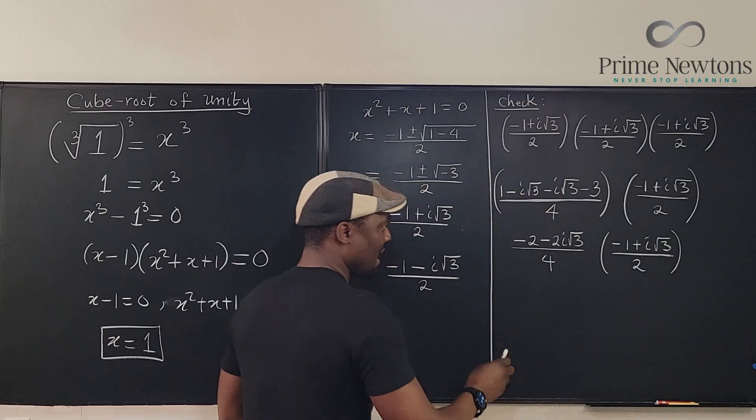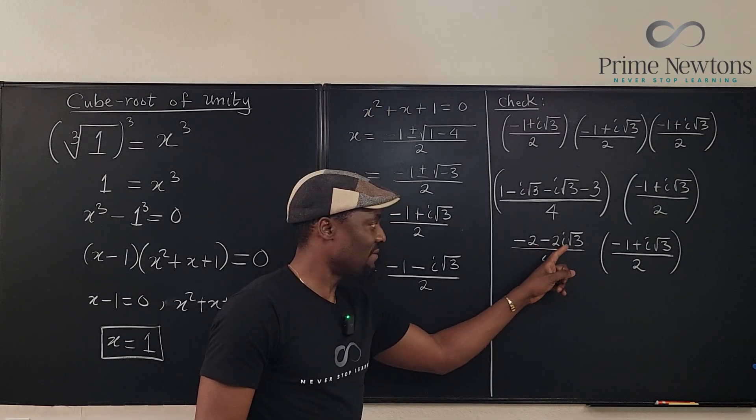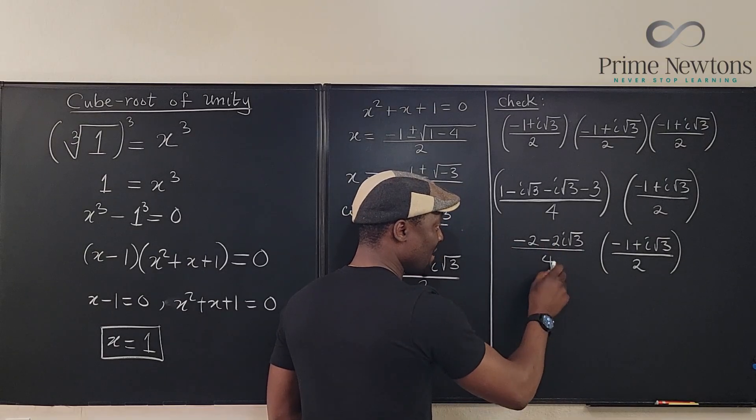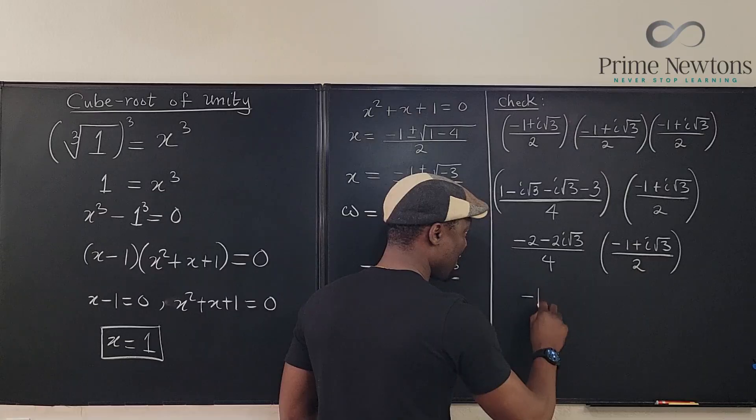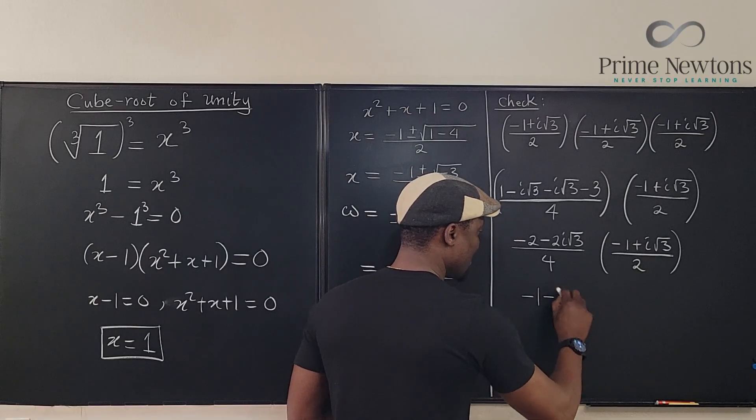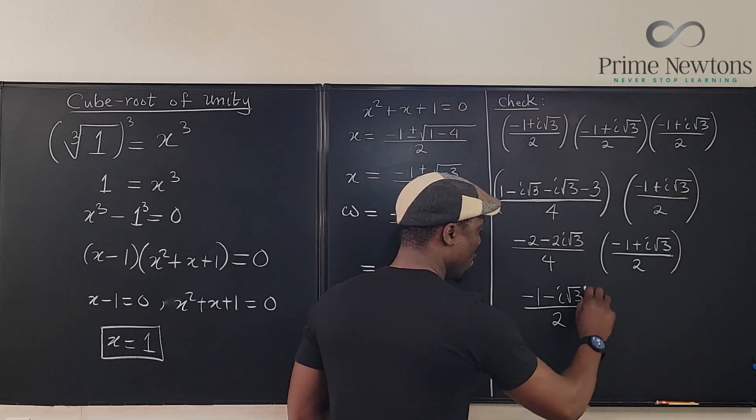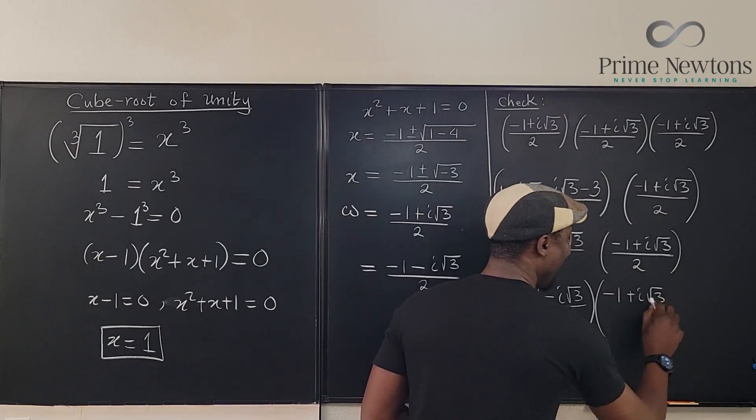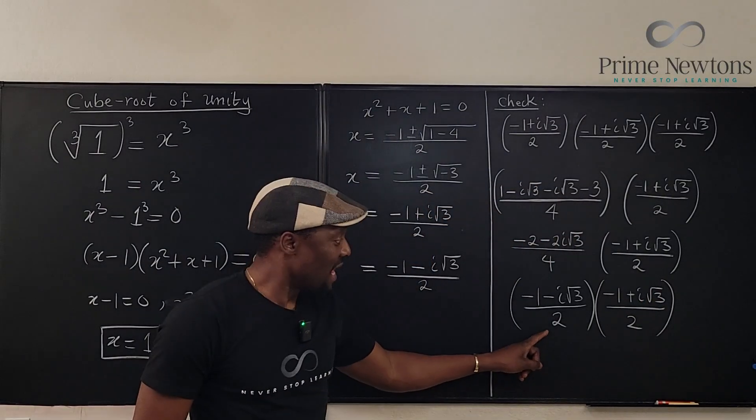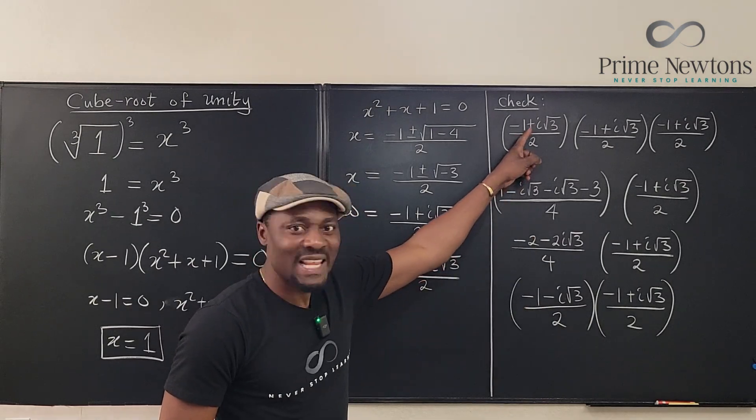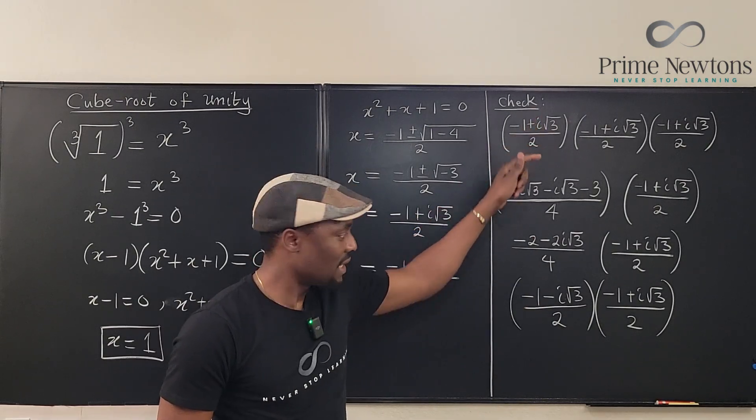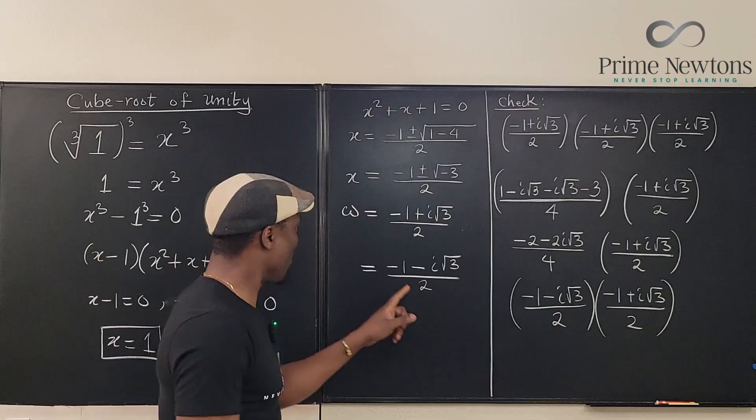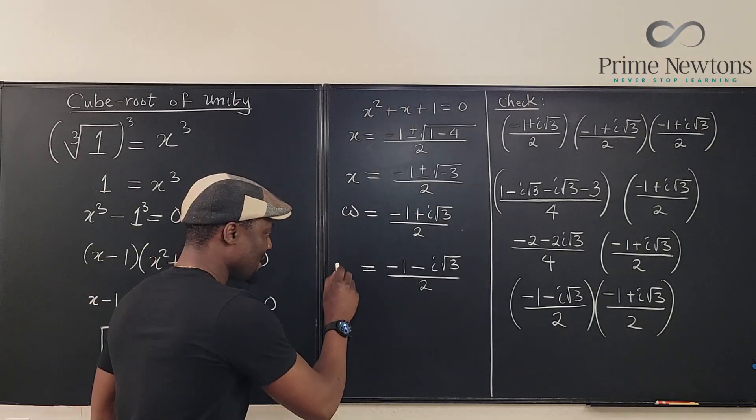Minus 2 times imaginary square root of 3 divided by 4. Can I simplify this? You see, everybody has a 2. I can factor out a 2. So, I can write this as 2. If I divide everything by 2 here, I end up with minus 1 minus imaginary square root of 3 over 2. No way. Do you see what just happened? The one that had a plus, when you square it, it becomes exactly the one that had a minus. So, if this is omega, this is omega squared.